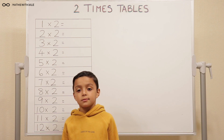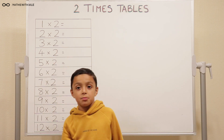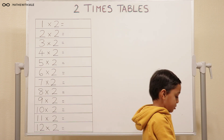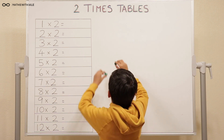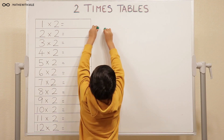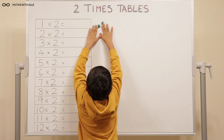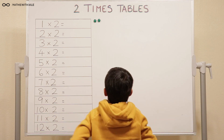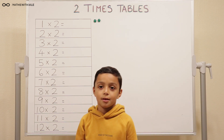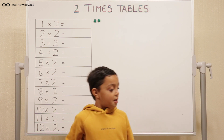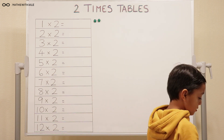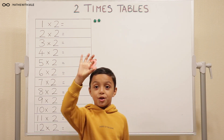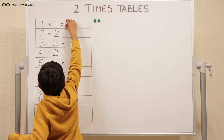What does the first question say? One times two. So can we start off using the counters, and then we'll explain what the two times tables actually are. We're going to put up these two counters here, and that's one group of two. One times two means one group of two, or one lot of two. So one times two equals two.